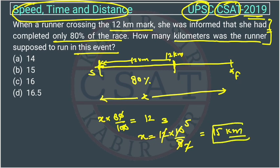So this is our answer — option B. The race is a 15 kilometer race. This was an easy question. I hope everybody got this right. If you still have some issues, you can connect with us.